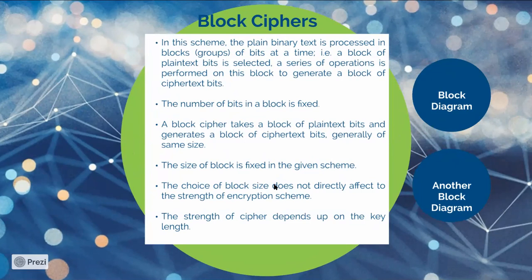After a series of operations on the entire block, the blocks of plain text are processed as a whole block. The block size can be 16, 32, or 64 bits. For instance, if you have a block with a 16-bit input, then you will have a 16-bit output. If you have a 64-bit block, then you have a 64-bit output. So a block takes a block of plain text bits and generates a block of cipher text bits generally of the same size. The size of block is fixed in the given scheme, and the choice of block size does not directly affect the strength of the encryption scheme — the strength always depends on the key length.